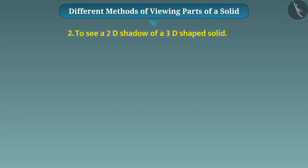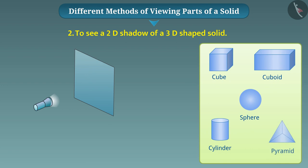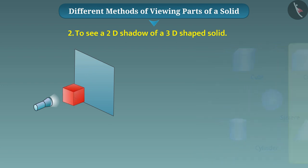For this, you will need a source of light, a screen, and some solid shapes such as cube, cuboid, sphere, cylinder, and pyramid. Now, you can take a cube and place it in front of the screen. Focus light on it right from the front. You will get its shadow on the screen.